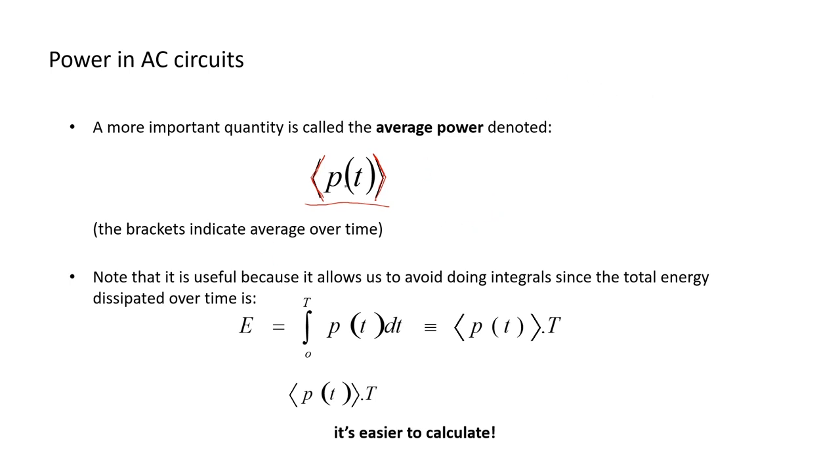It's useful to use average power because it avoids us having to do integrals, since total energy dissipated over time is given by E equals the integral of power with respect to time, and that gives us the average times time - and this is much easier to calculate.